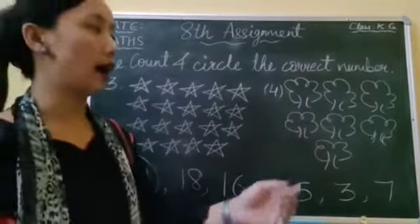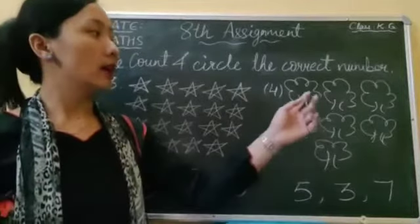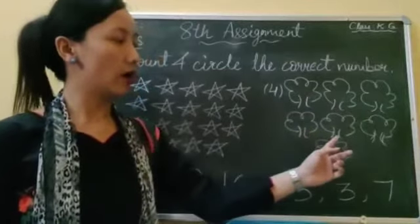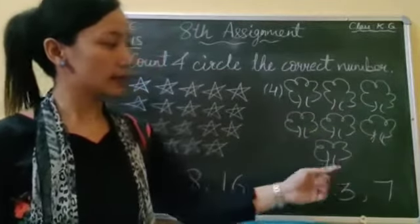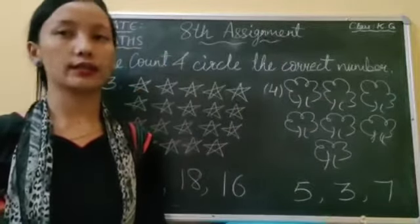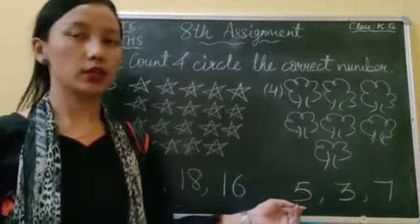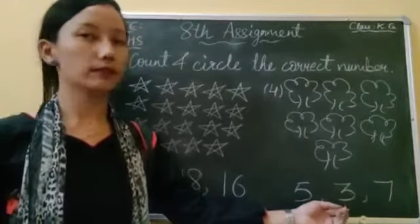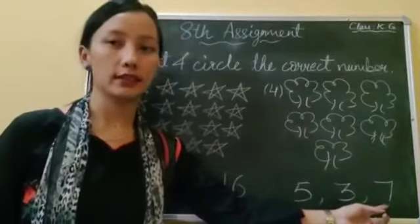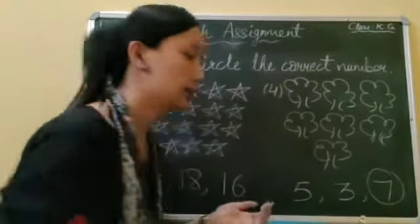Now next we have trees. Let's count how many trees are there. One, two, three, four, five, six, seven. How many trees are there? There are seven trees. Is this number seven? No. Is this seven? No. Is this seven? No. Is this seven? Yes, this is number seven. So circle it like this.